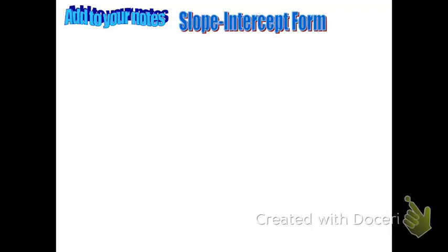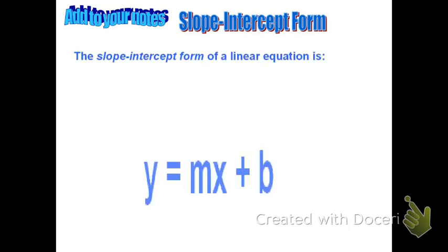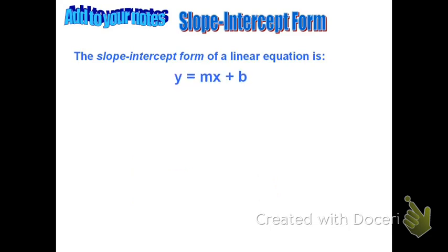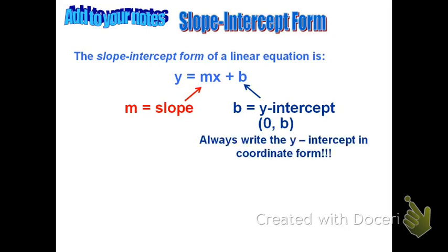This video will review and help you understand how to use the slope-intercept form of a linear equation. The slope-intercept form is written as y equals mx plus b, where m is the slope and b is the y-intercept. When you write the y-intercept, write it as a coordinate: zero comma whatever that b value is.